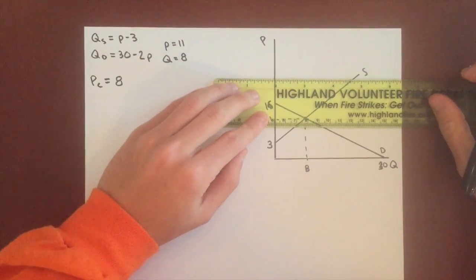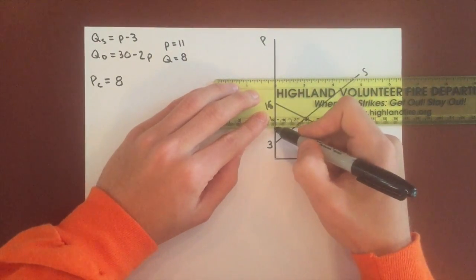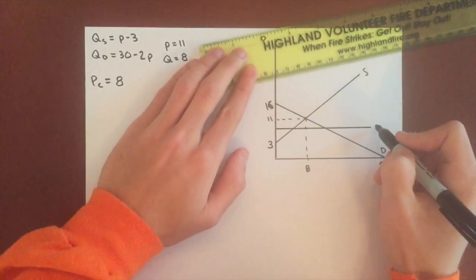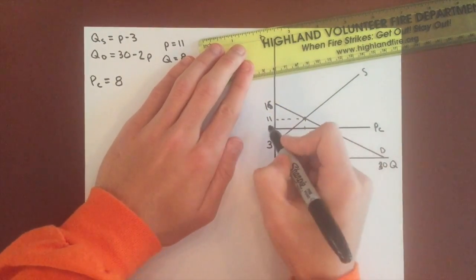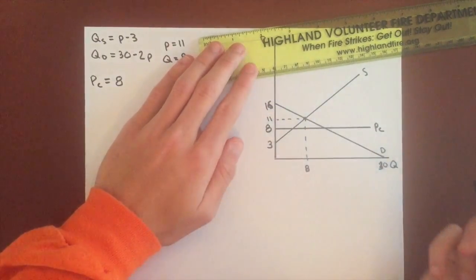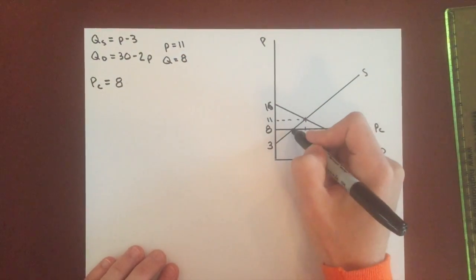So we can draw this in here. Price ceiling, 8. A little bit messed up graph, but that's alright.